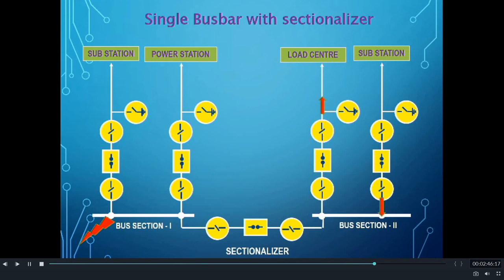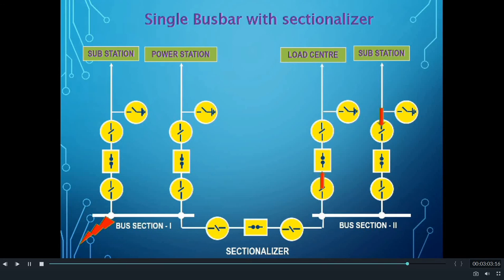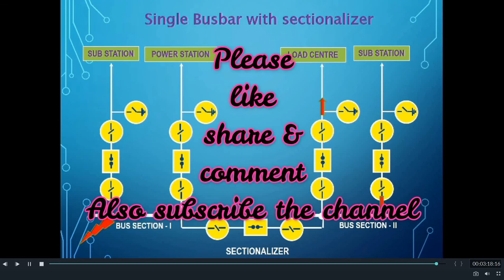Hence, when a Sectionalizer is equipped with only an Isolator, there will be an outage of all the feeders for a Bus Fault. On separation of the faulty Bus Section by opening the Sectionalizer Isolator, the healthy part of the Bus Section can run normally once again. But when a Sectionalizer is equipped with a Circuit Breaker, all the feeders are not interrupted for any Bus Fault — only the feeders connected to the faulty section are interrupted. Hence, Single Busbar with Sectionalizer is considered more reliable than the Single Busbar Scheme.